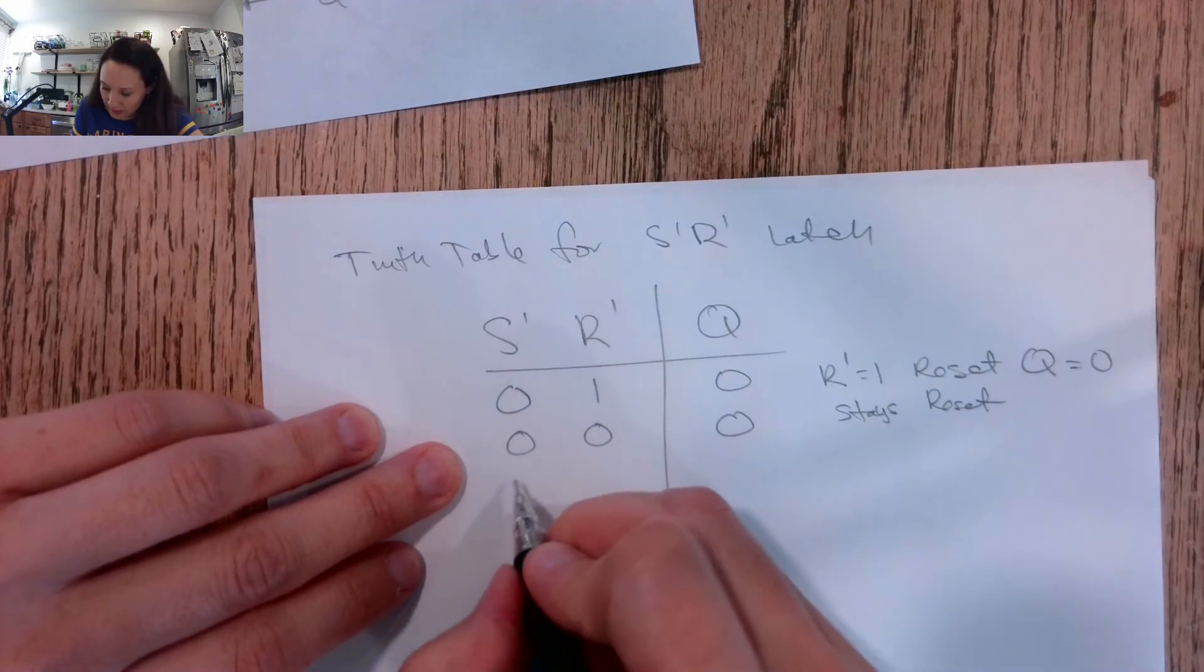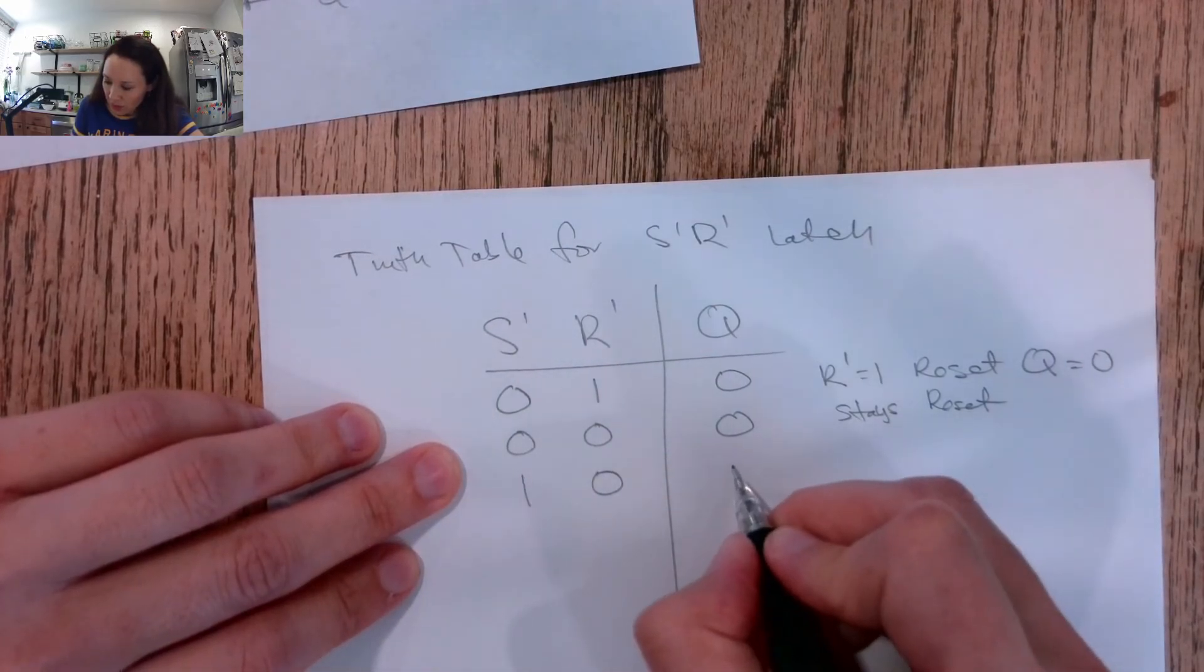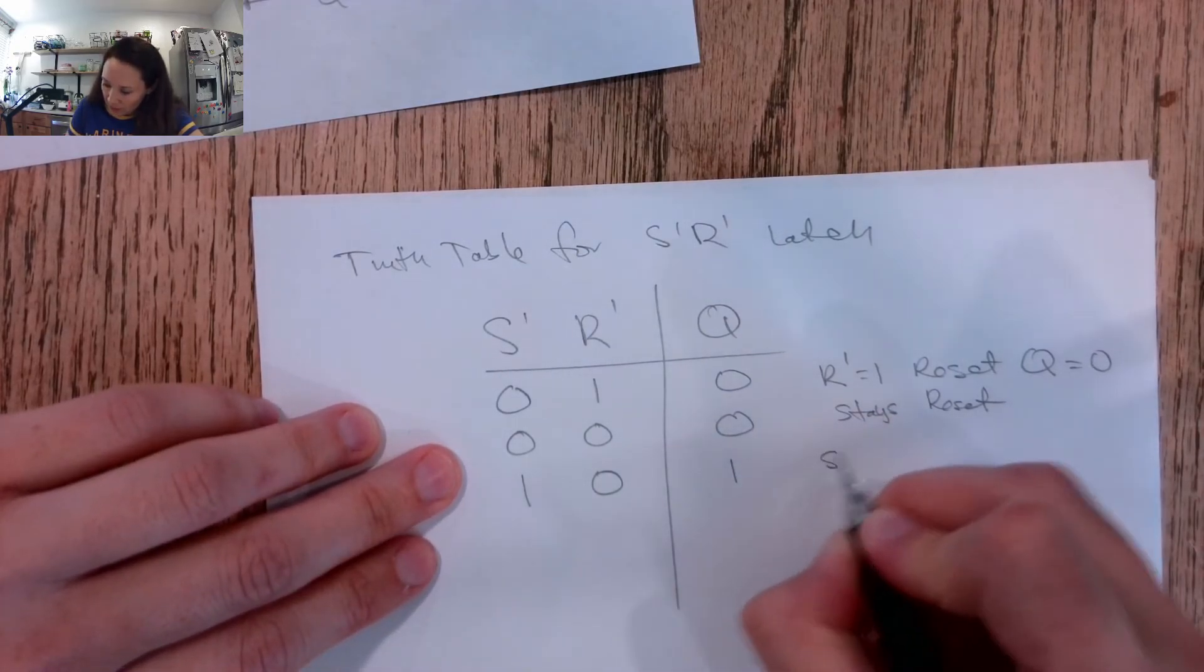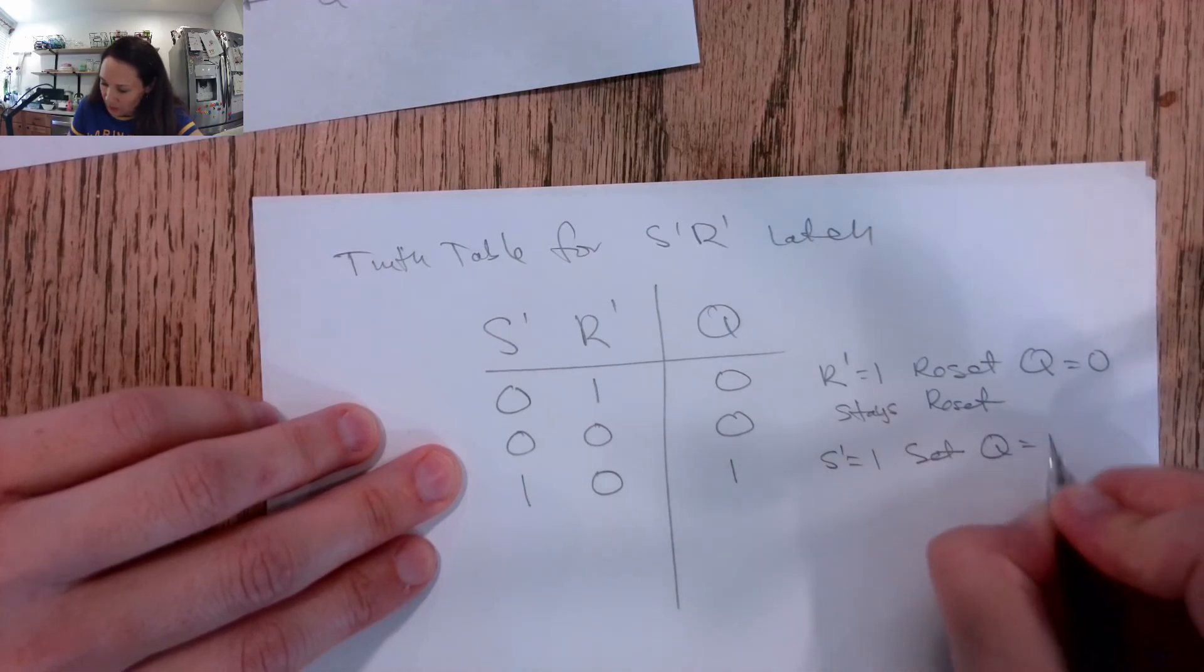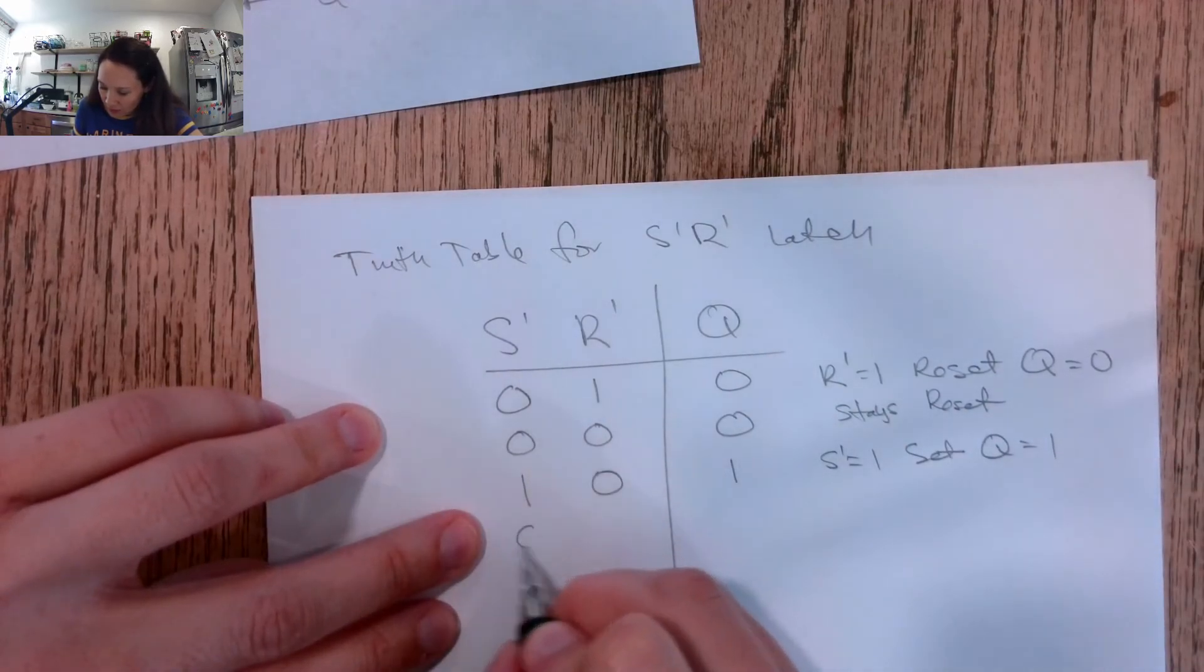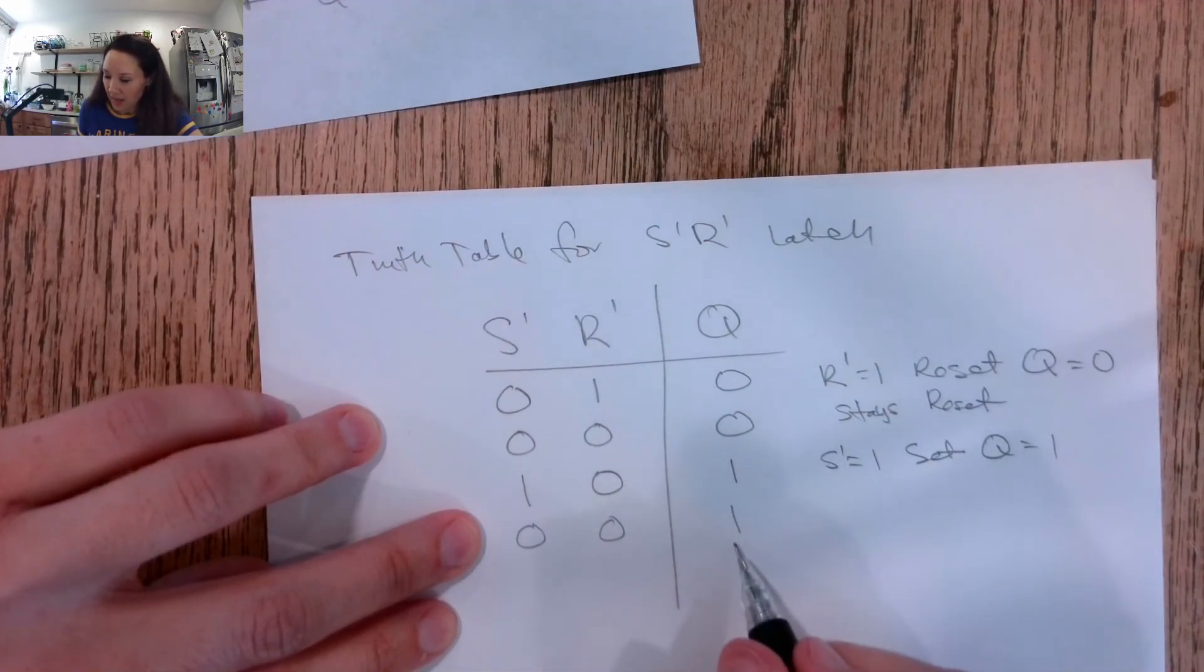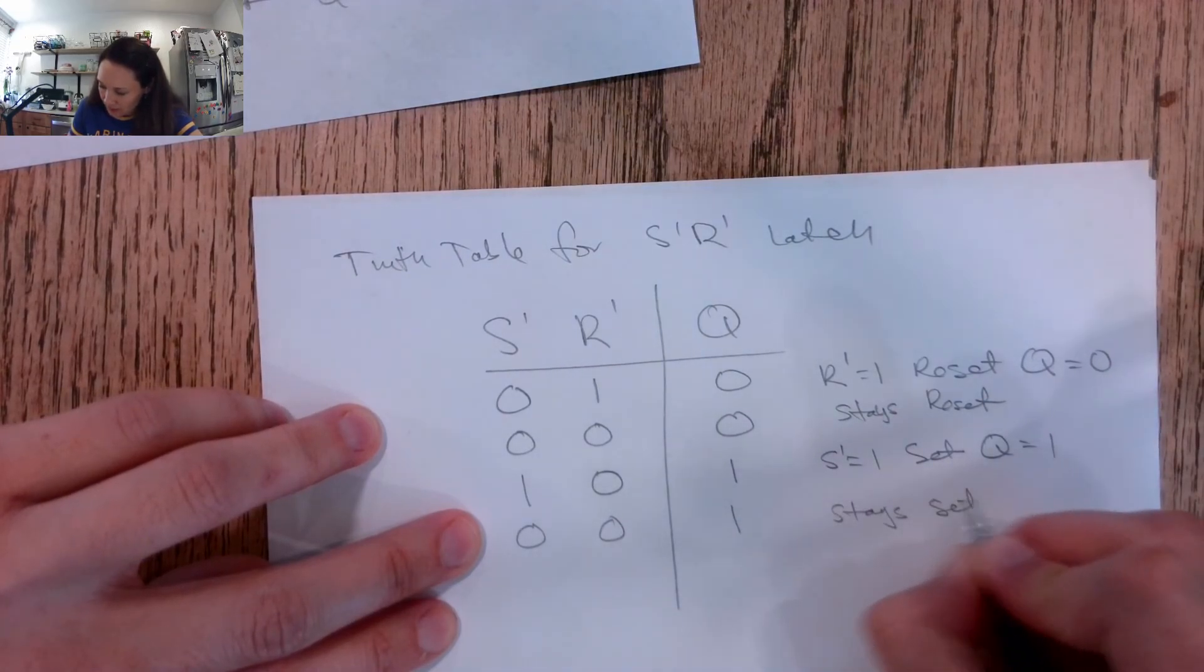To set this latch, this is going to set when S naught is high. So if we have this situation, then we're going to set our latch output to 1. So S naught equals high, we're going to set Q equal to 1. And then after this goes to zero, we'll have a 1 still set here on our output Q. So stays set.